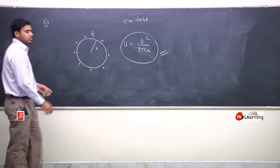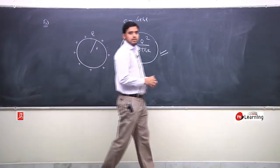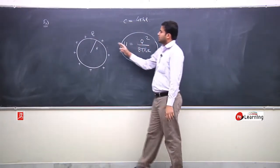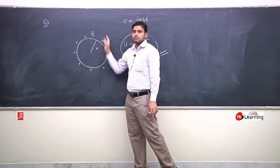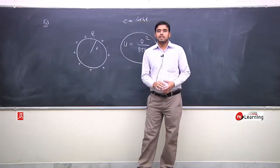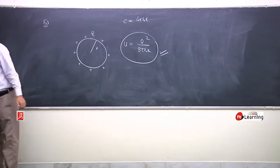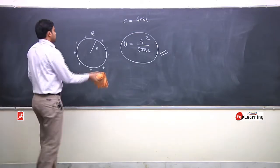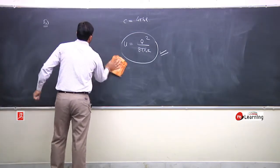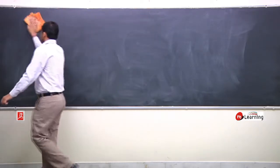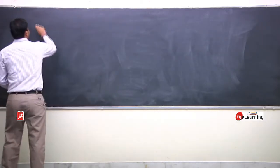The question asks: spherical conductor is uniformly charged. Find out energy of this conductor. The conductor has how much energy stored? The energy is Q square by 2C.